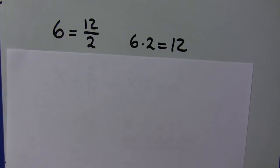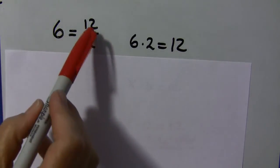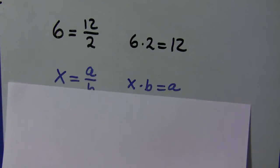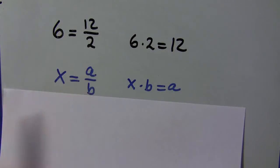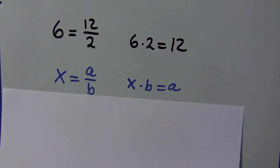First of all, looking at our properties of division, we can say 6 equals 12 over 2 because we know that 6 times 2 equals 12. Well, by this rule, we could say that x equals a divided by b, and we can test that by saying x times b equals a.